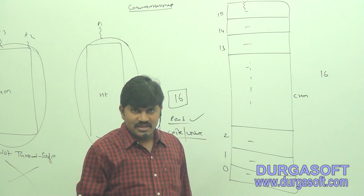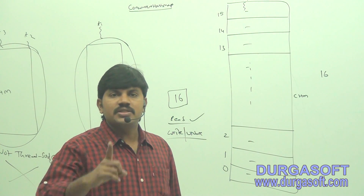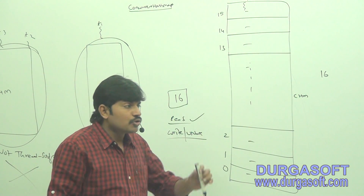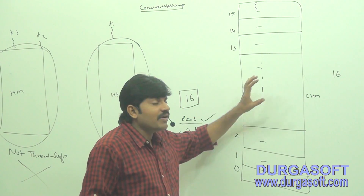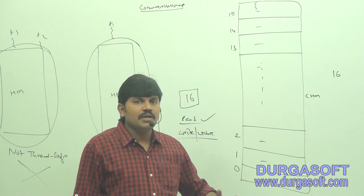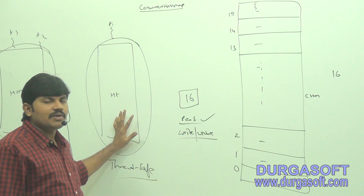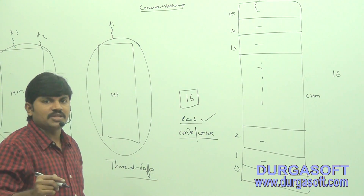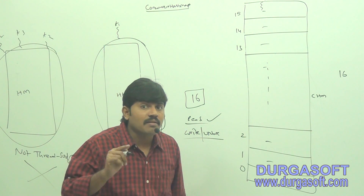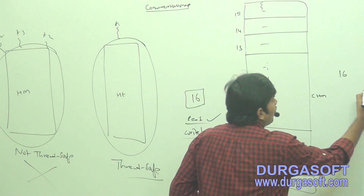At a time, how many threads are allowed to perform update operations simultaneously? 16 threads — 16 update operations can be performed simultaneously. Read operations allow any number of threads. Instead of a total map object lock, we get a bucket-level lock. With this different locking mechanism, performance is going to be improved. In HashTable, if a thread wants to perform any read or write operation, it compulsorily requires the total map object lock. But in ConcurrentHashMap, read operation does not require a lock, and write or update operation only requires a bucket-level lock.